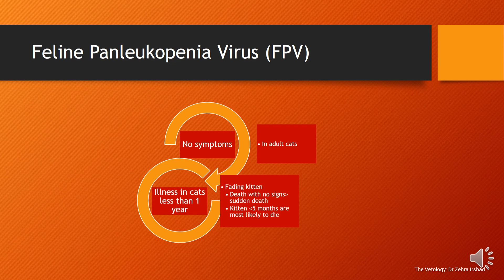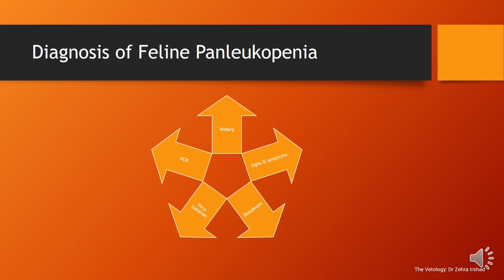This disease is mostly subclinical with no symptoms in adult cats. Illness is more commonly seen in cats less than one year of age. Fading kitten syndrome, characterized by sudden death with no signs, is observed, and kittens less than five months old are most likely to die from this disease.